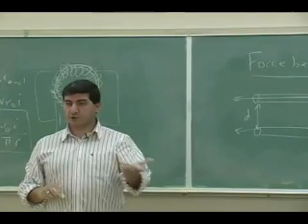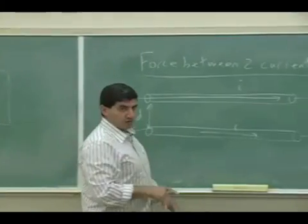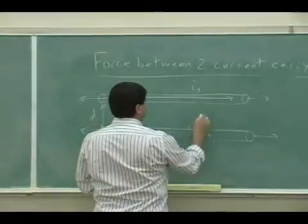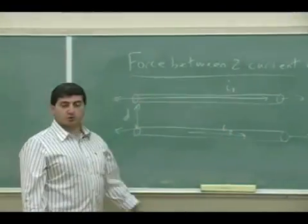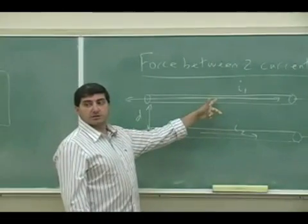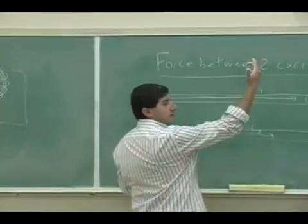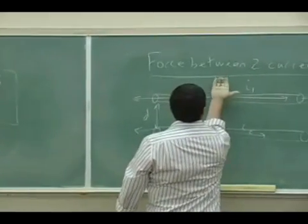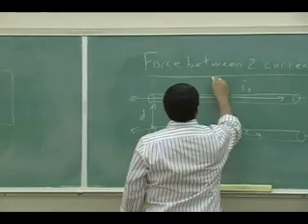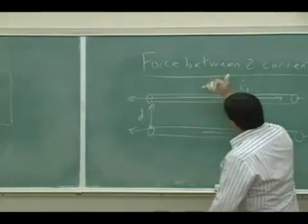So tell me how much do they attract each other, do they repel each other, and what's the force between them? Well, here's how you do it. You say the top one, let's say they could even carry different currents, I₁ and I₂. The top one creates a B field around it, right? So take your right hand and apply the right hand rule, curl your fingers.